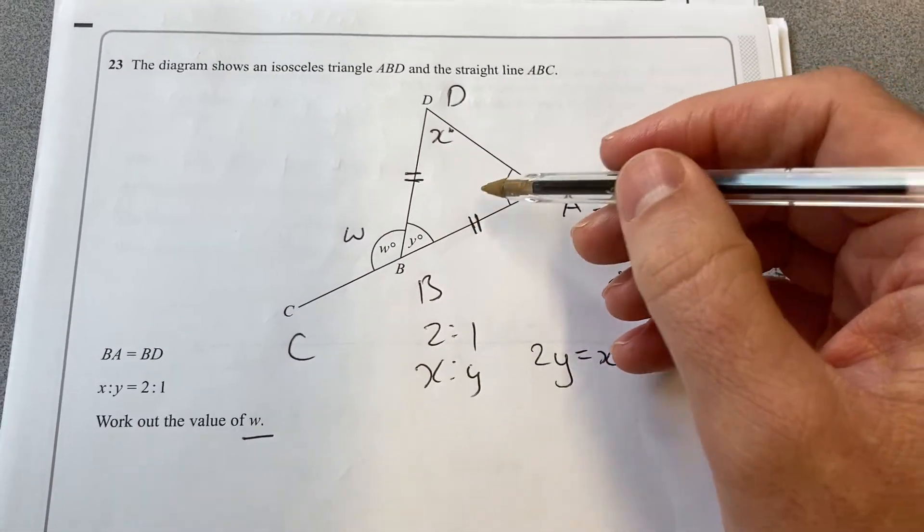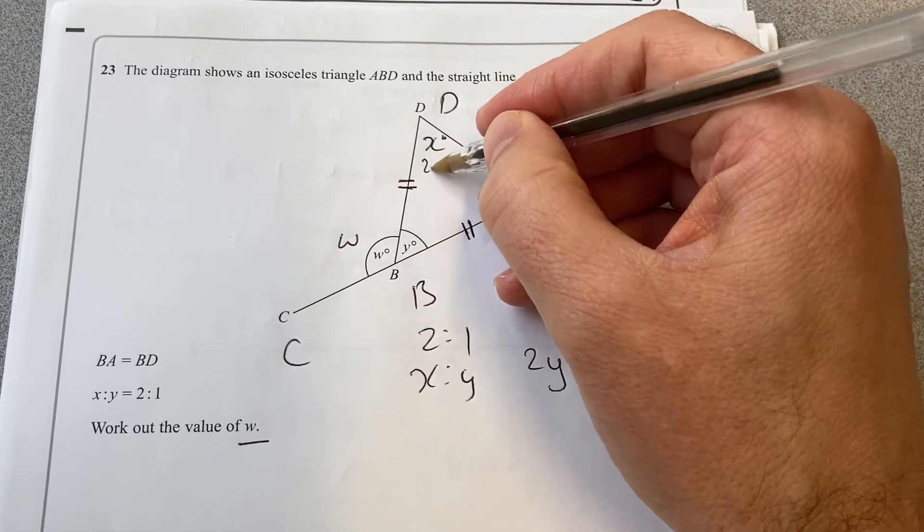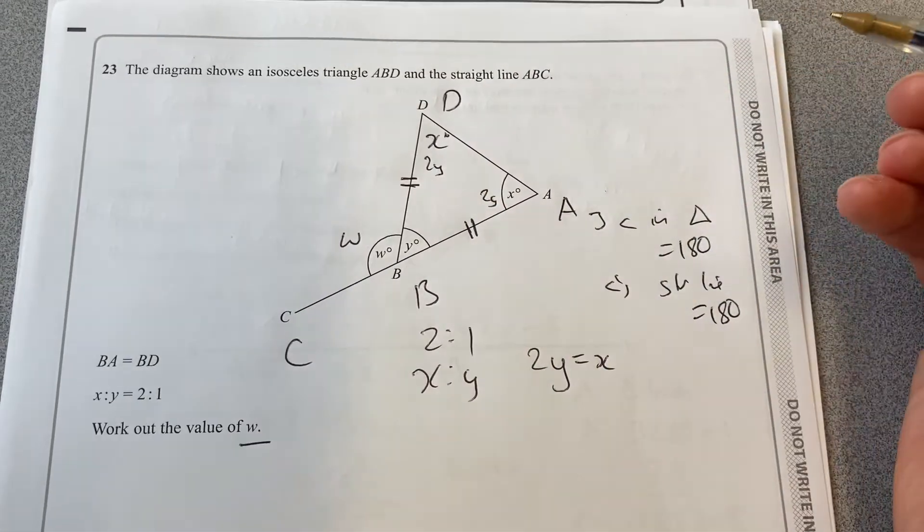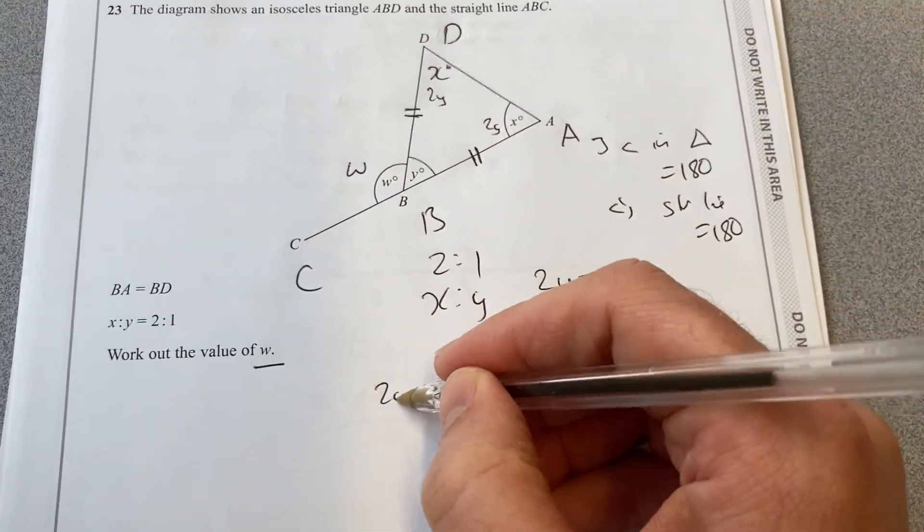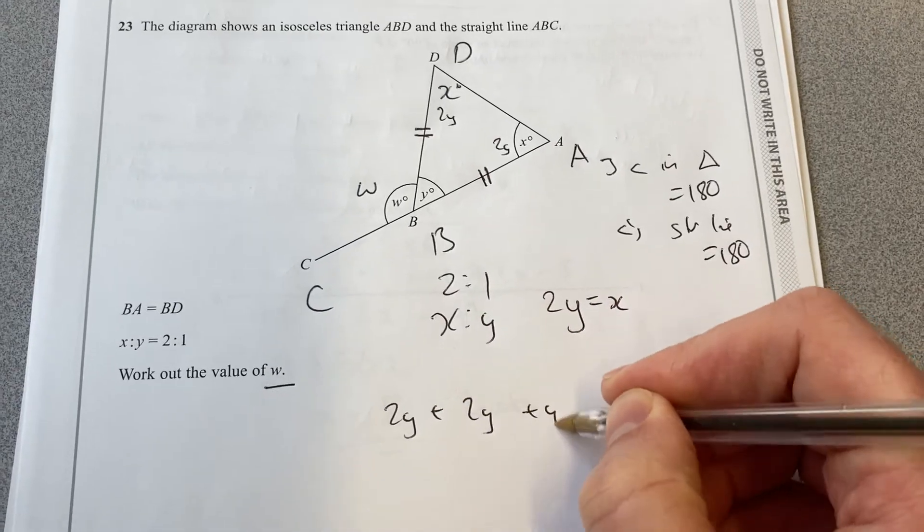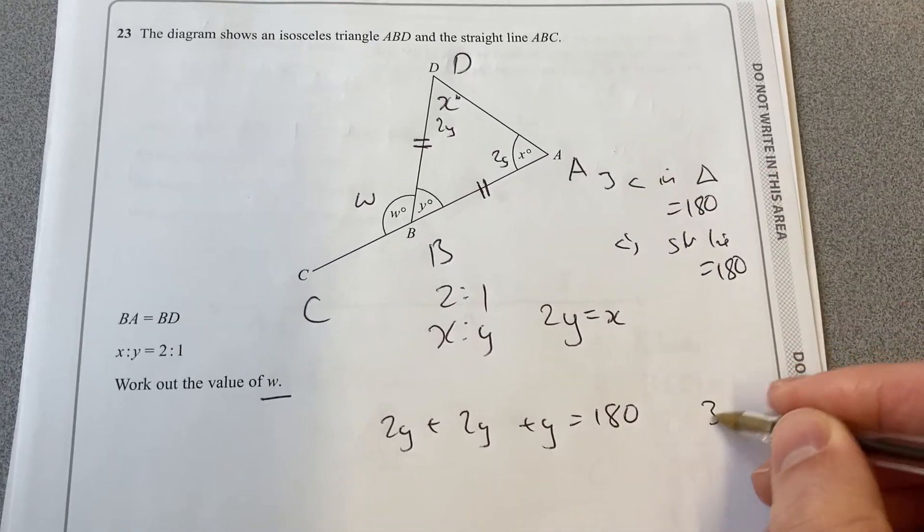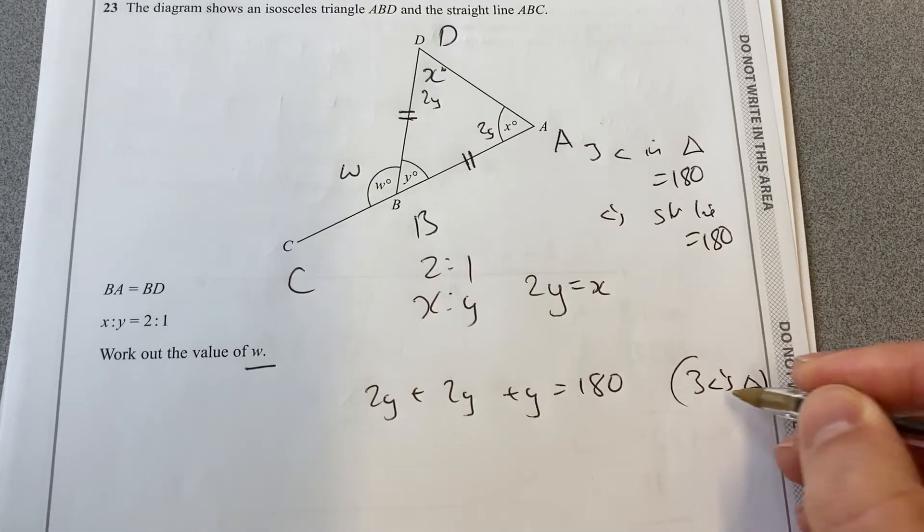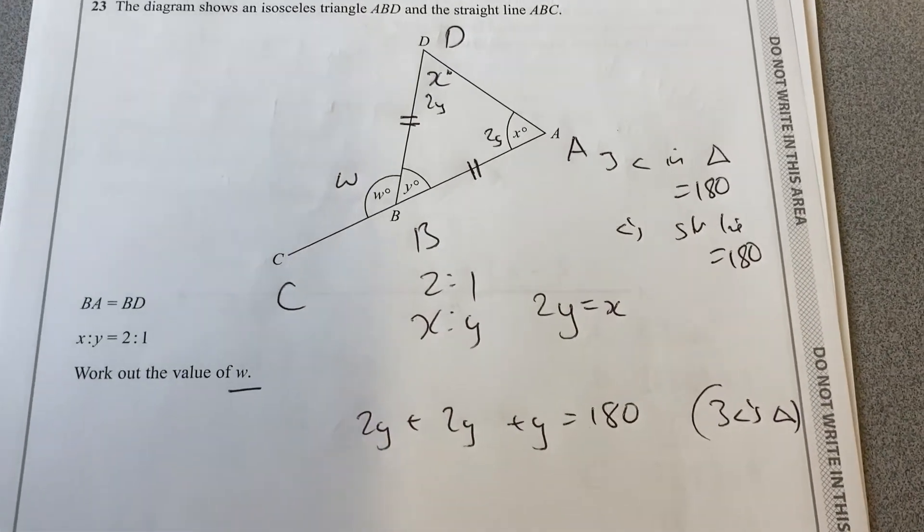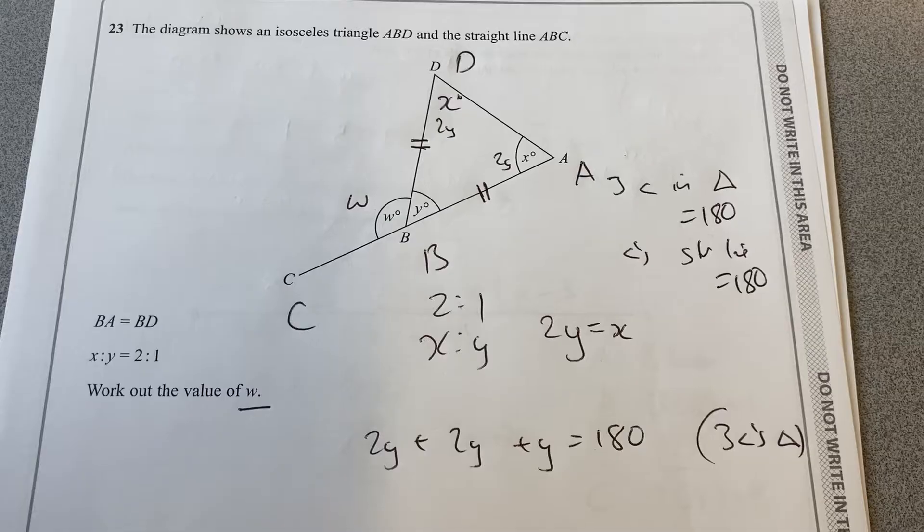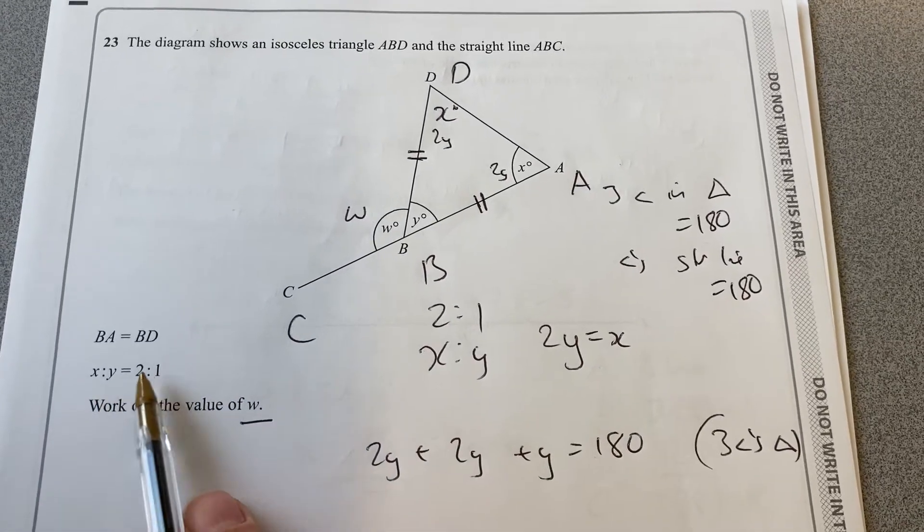So we're going to use that piece of information there and there. Now X is double Y, so I'm going to call this 2Y and that 2Y. So then I know that 2Y plus 2Y plus Y will equal 180. That's from three angles in a triangle. I'm just using shorthand there, but you could write it out more formally, because X is double Y.